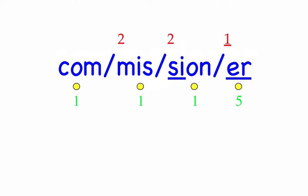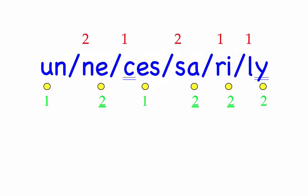Unnecessarily. The animal was treated in an unnecessarily rough manner. Six syllables. First syllable: Un, two sounds, A-N. Ne, two sounds, N-E. Cess, three sounds, S-E-S. Sa, two sounds, S-A. Ri, two sounds, R-I. Li, two sounds, L-E. Un-ne-cess-sa-ri-li. Mark the word. Unnecessarily.